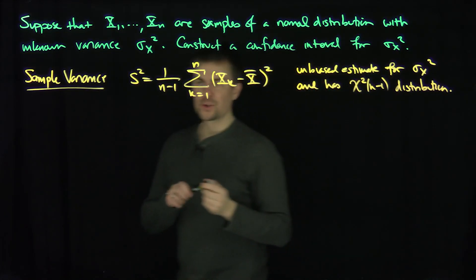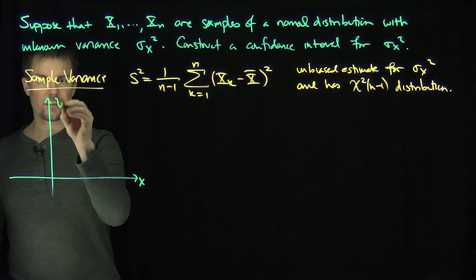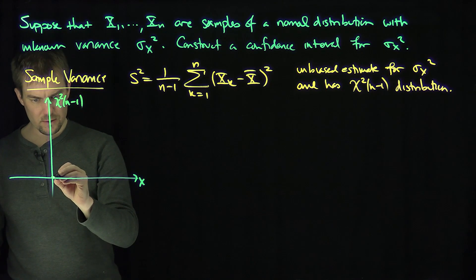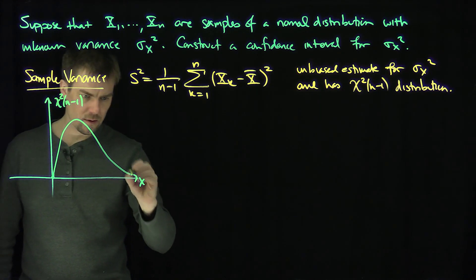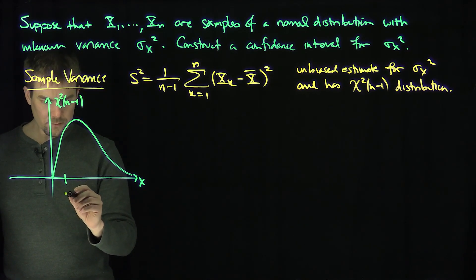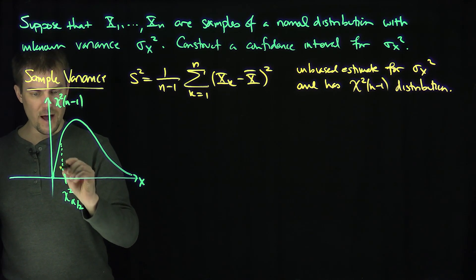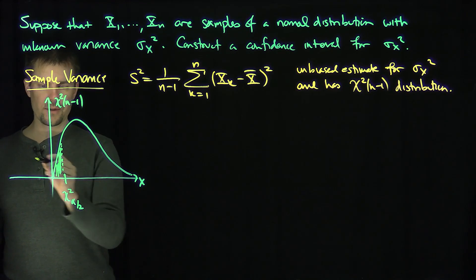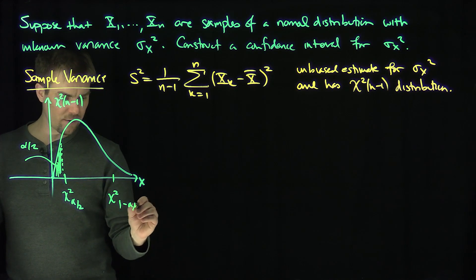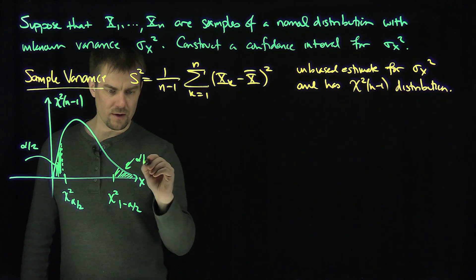Now, chi-squared distributions are supported on the positive half axis. Here's x, and here's the chi-squared n minus 1 distribution — it looks something like this. I'm going to pick the number chi-squared alpha over 2, which is a percentile meaning that alpha over 2 of the mass is in that left region. And I'll also pick chi-squared of 1 minus alpha over 2, with alpha over 2 of the mass in the right region.